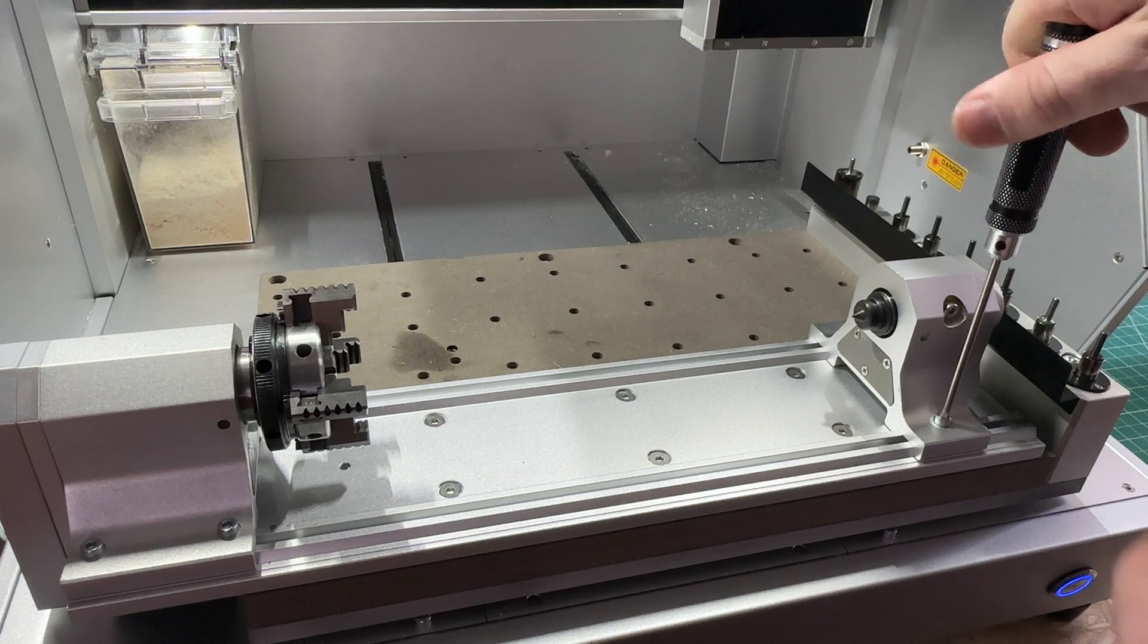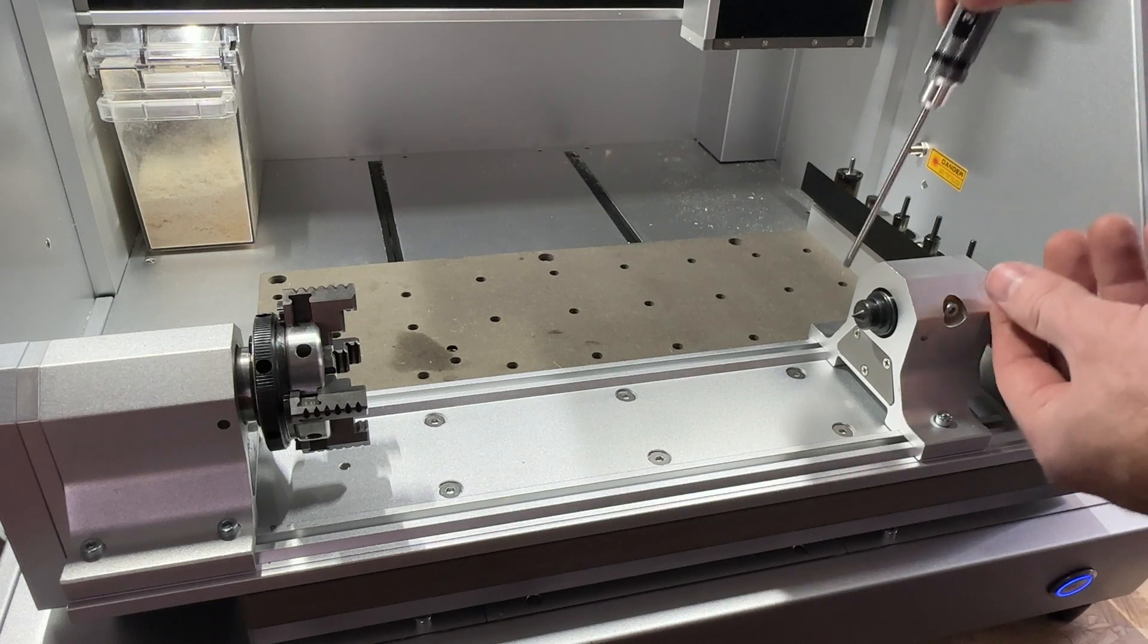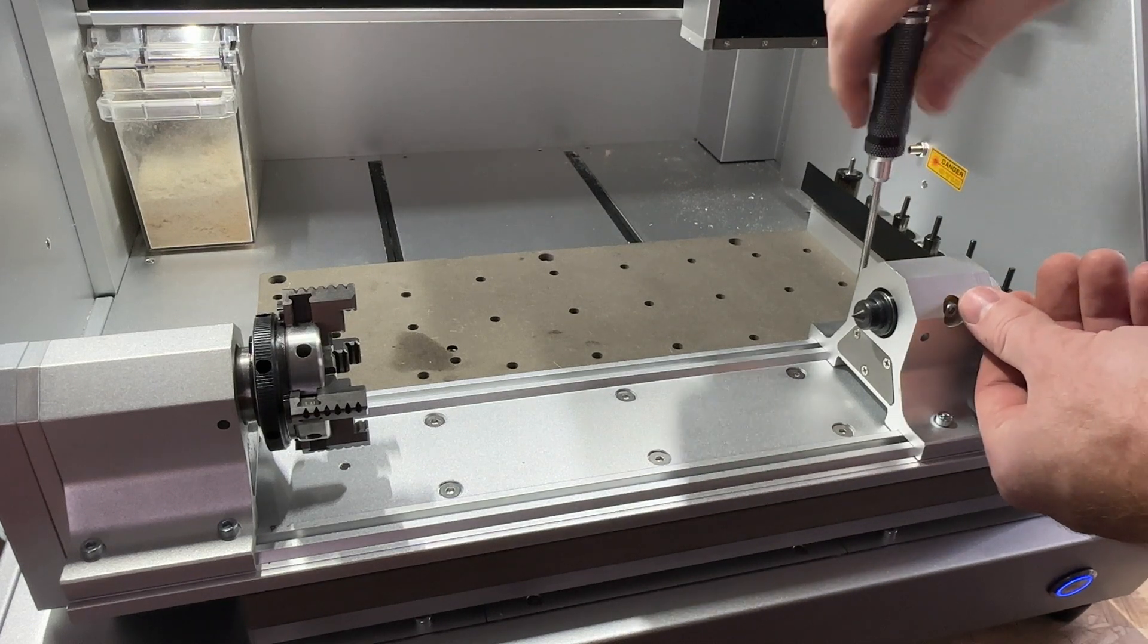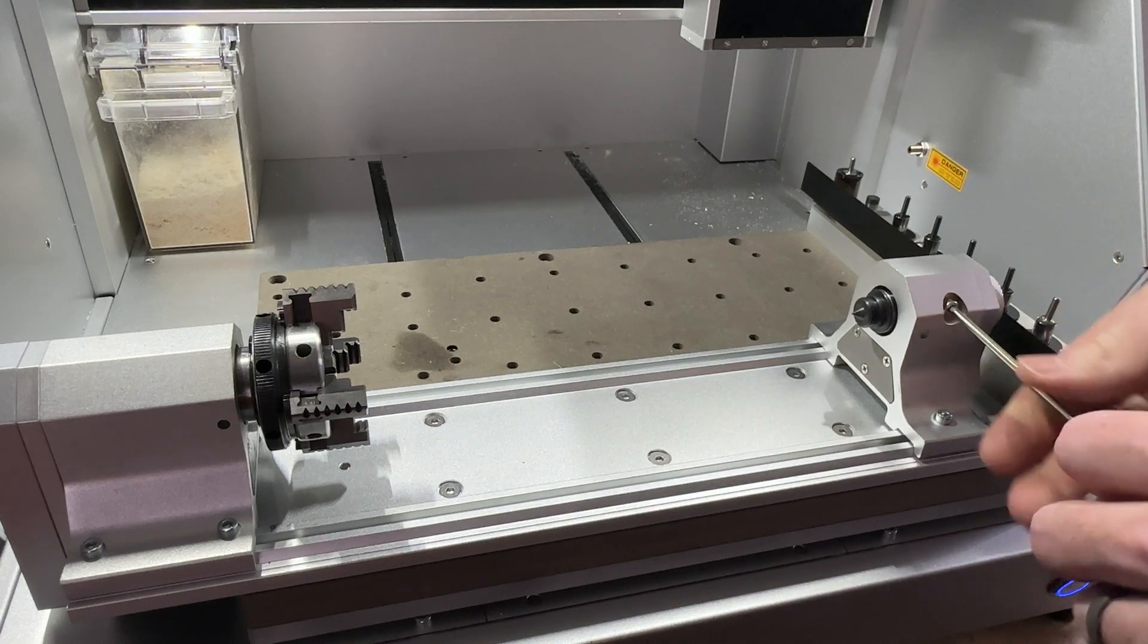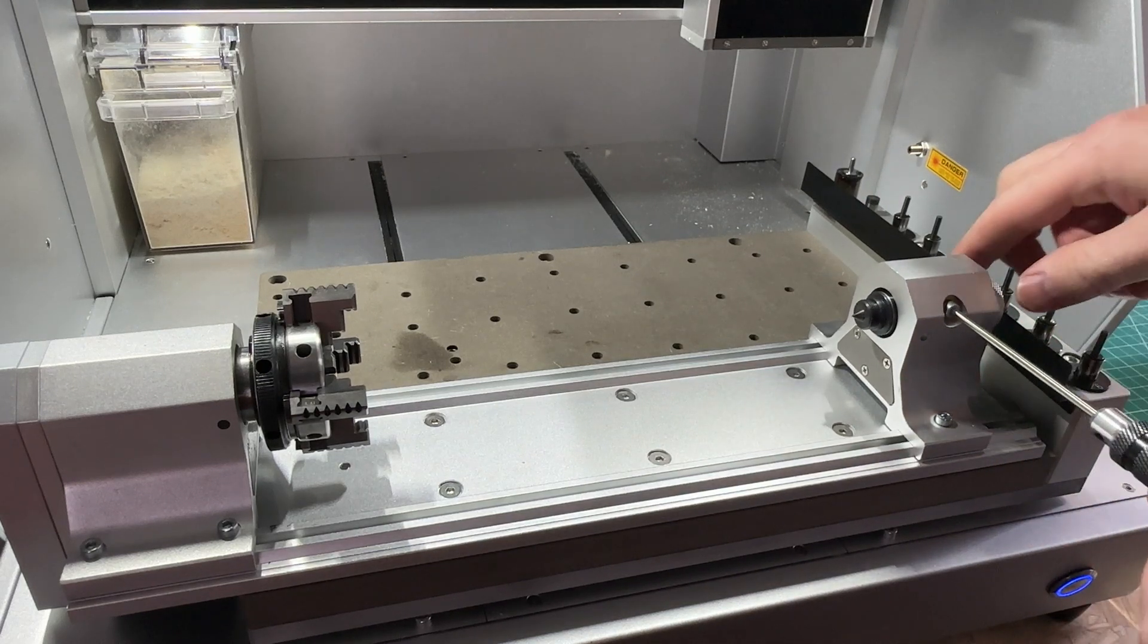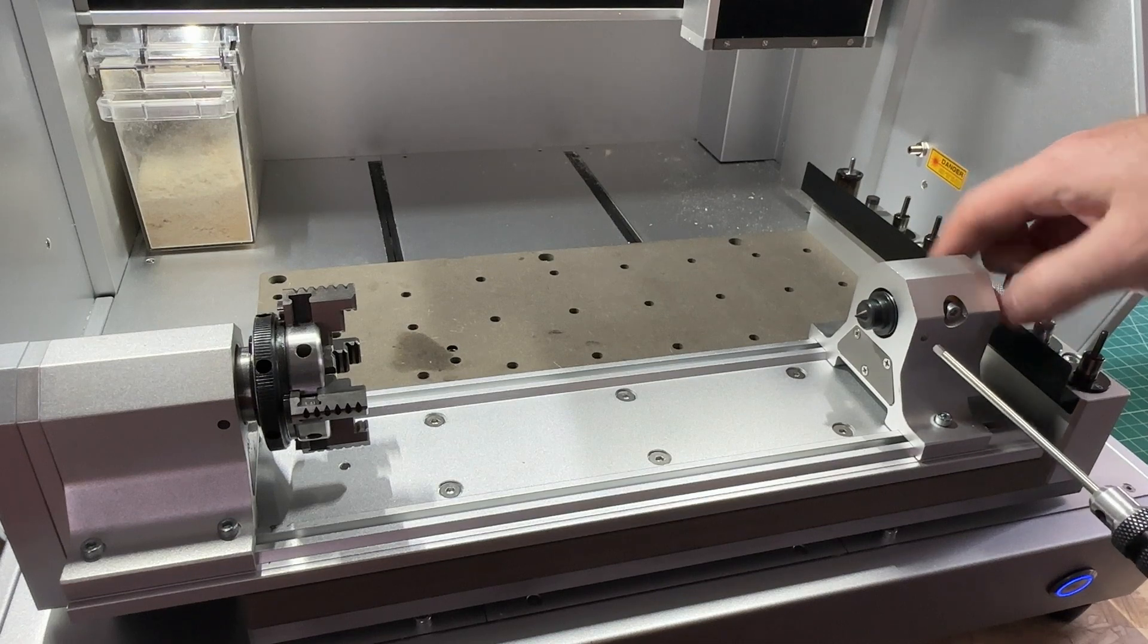The tail stock can be slid along the rotary module by first loosening the two set screws on either side. You do not need to fully remove these screws. We can also loosen the set screw at the top of the tail stock so that we can rotate the handle which is used to clamp the tail stock into our parts.